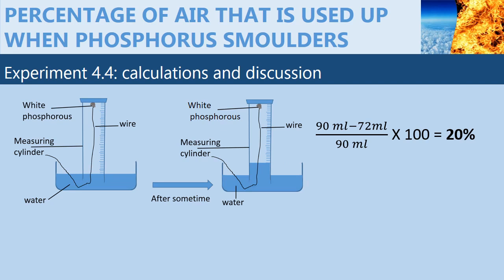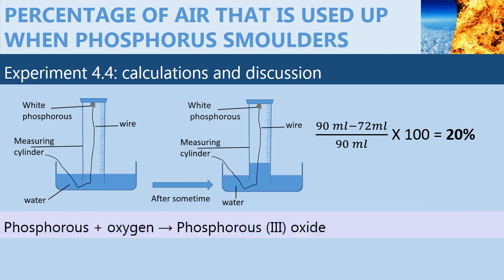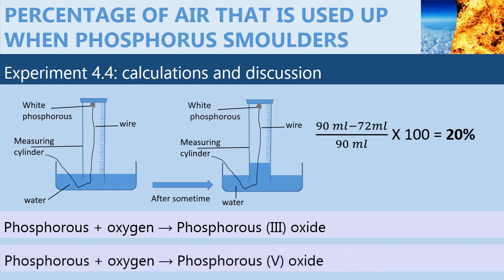Another important thing to note is that smoldering of phosphorus in air is a chemical reaction, or a chemical change, and it takes place according to the following equation. Phosphorus smolders in oxygen to give phosphorus 3 oxide and phosphorus 5 oxide. These are two different reactions, but they take place simultaneously. Therefore, phosphorus smolders in oxygen to form a mixture of both phosphorus 3 oxide and phosphorus 5 oxide.